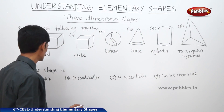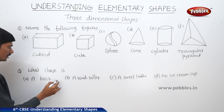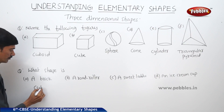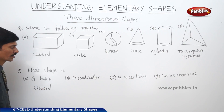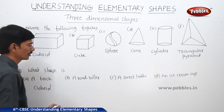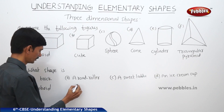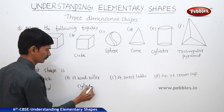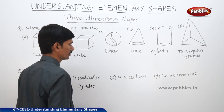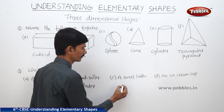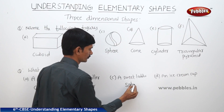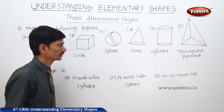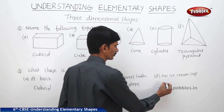Now the next question: what shape is a brick? A brick is in the shape of a cuboid. A road roller is in the shape of a cylinder. A sweet laddoo is in the shape of a sphere. And an ice cream cup is in the shape of a cone.